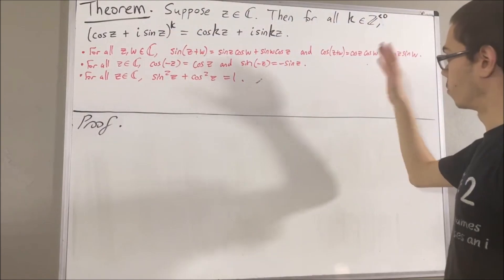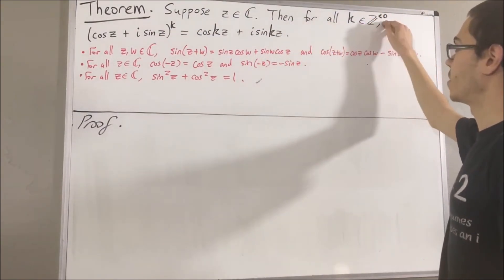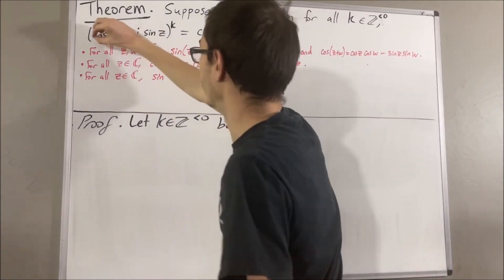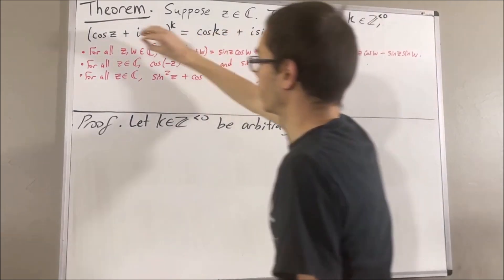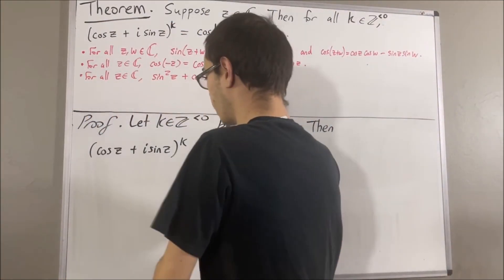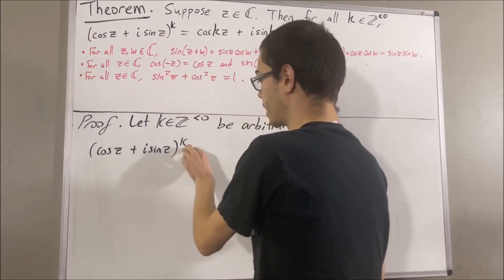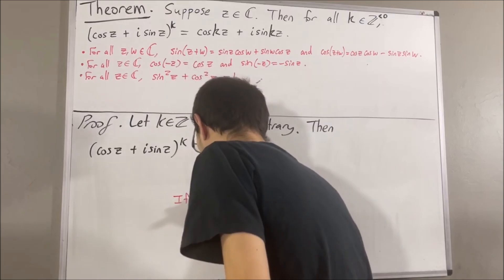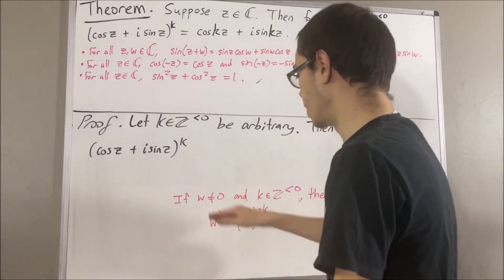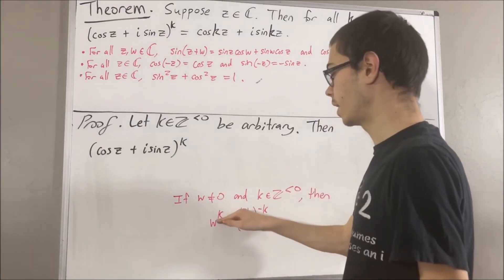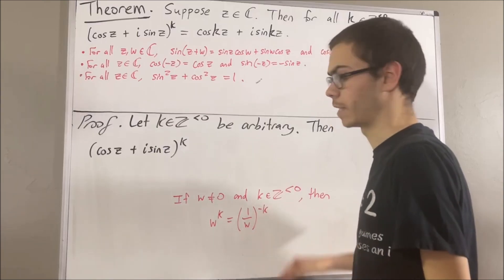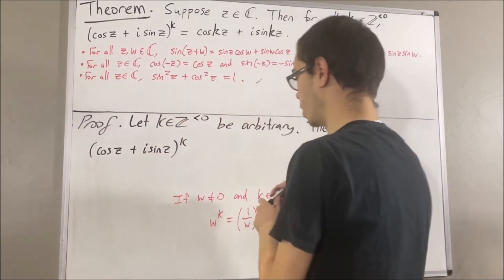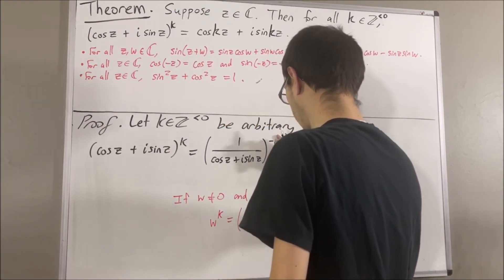So, now let's prove it. Since we're trying to prove a statement about every negative integer, let's give ourselves an arbitrary negative integer k. From here, we want to prove that this is true. Let's start by writing the left-hand side. We're raising a number to the power of a negative integer. In general, if w is a non-zero number and k is a negative integer, then w to the k is equal to the reciprocal of w to the power of negative k. In fact, you can define negative integer exponents in this way. So, applying this fact to our proof, this is just equal to this.